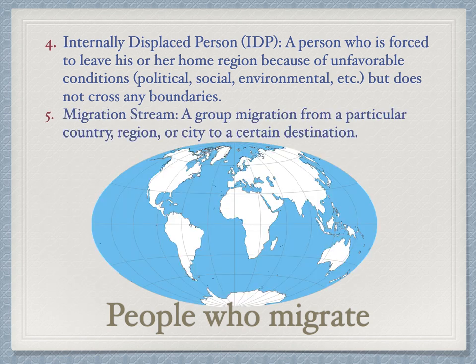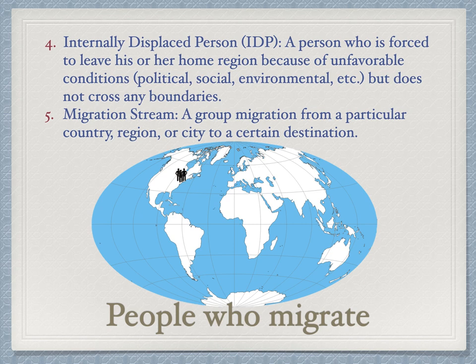A migration stream is a group migration from a particular country, region, or city to a certain destination. We see this in U.S. history — for example, during the Irish Potato Famine, when millions of Irish people were starving and came to the United States in large numbers.